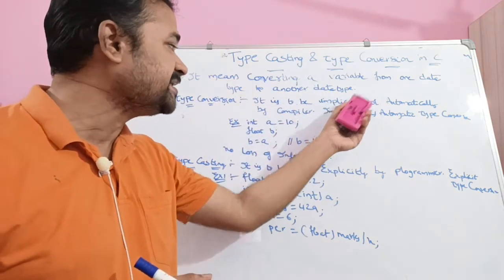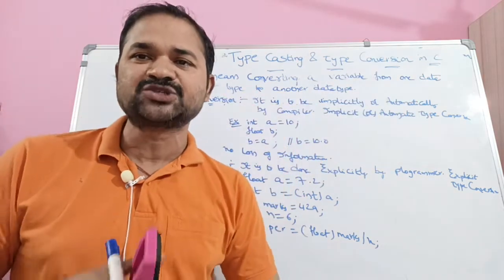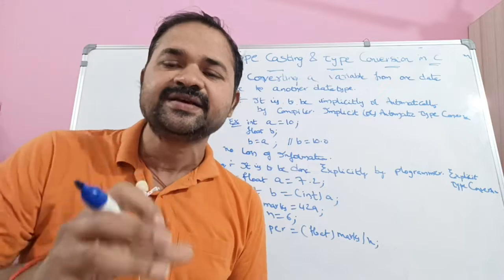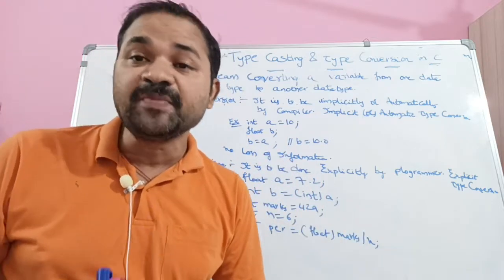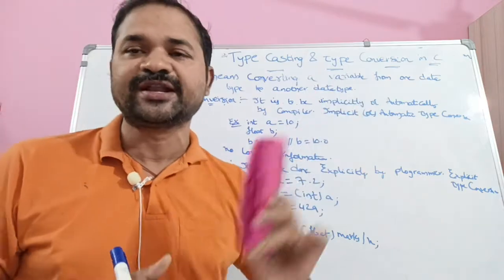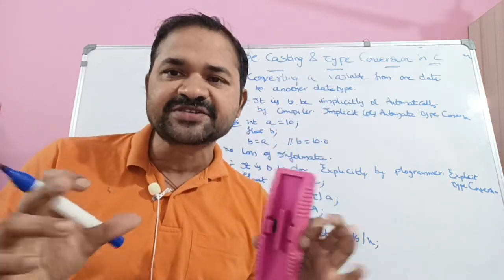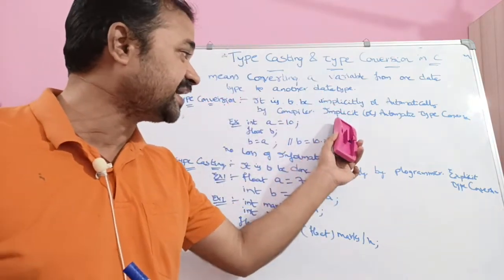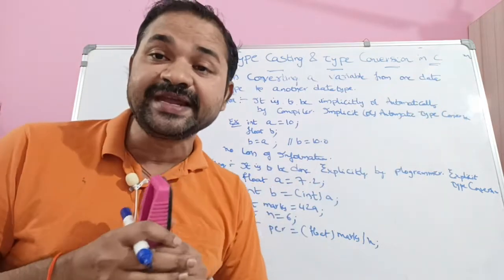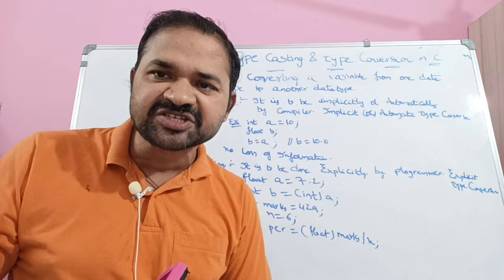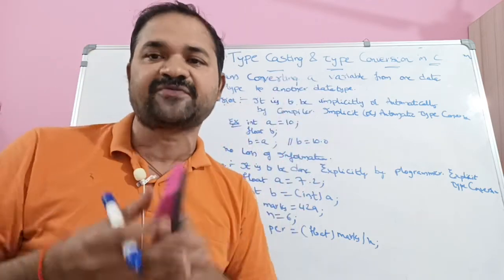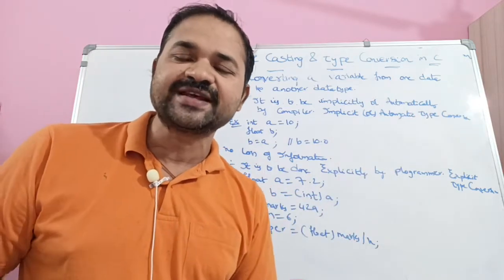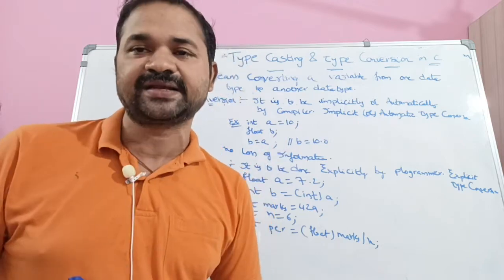Type conversion is done implicitly or automatically by the compiler. So, type conversion means we don't have to do anything — the compiler performs it automatically. This is also called implicit type conversion or automatic type conversion, because the conversion is done automatically by the compiler.